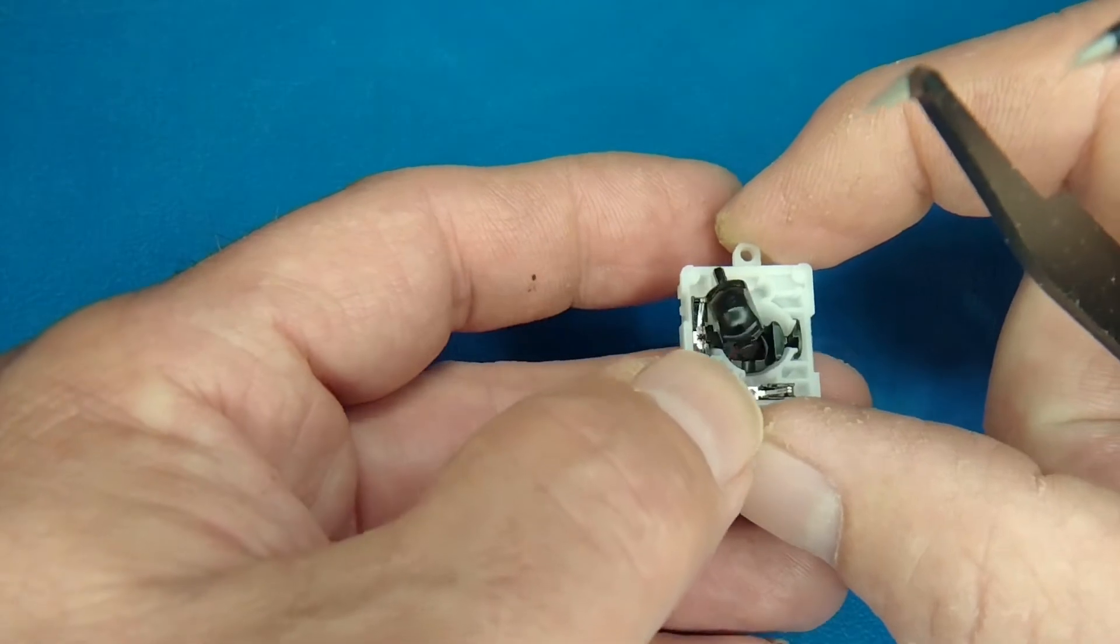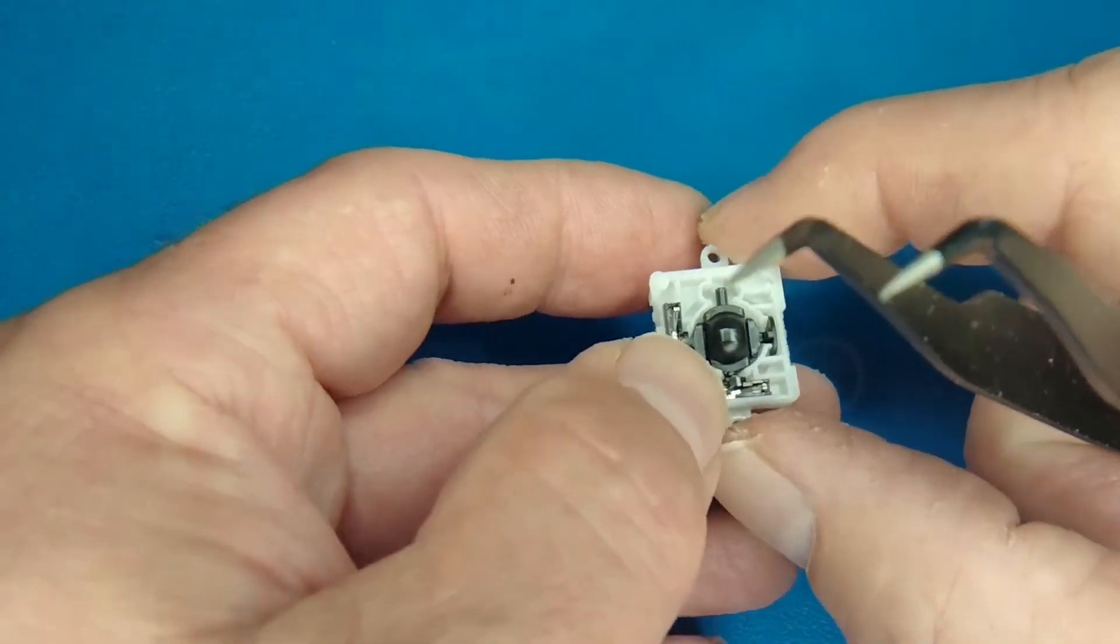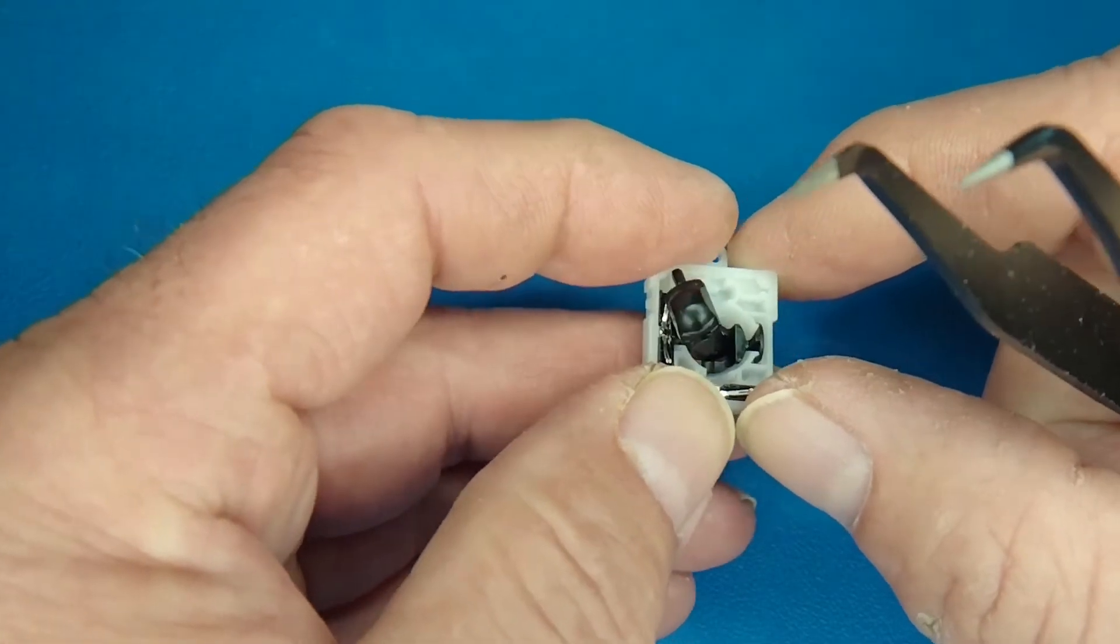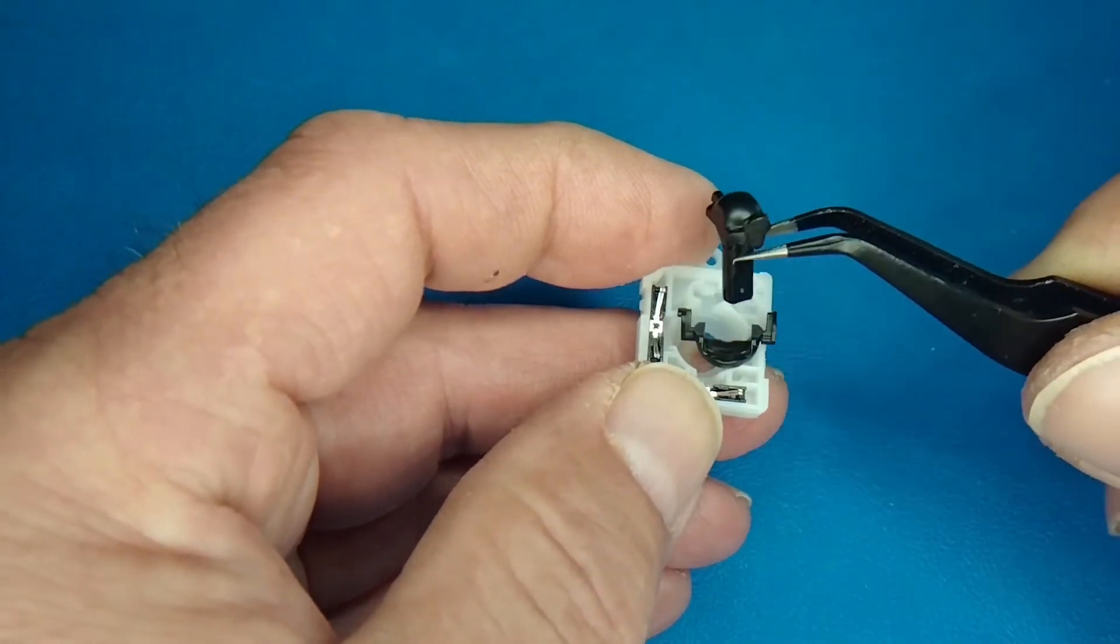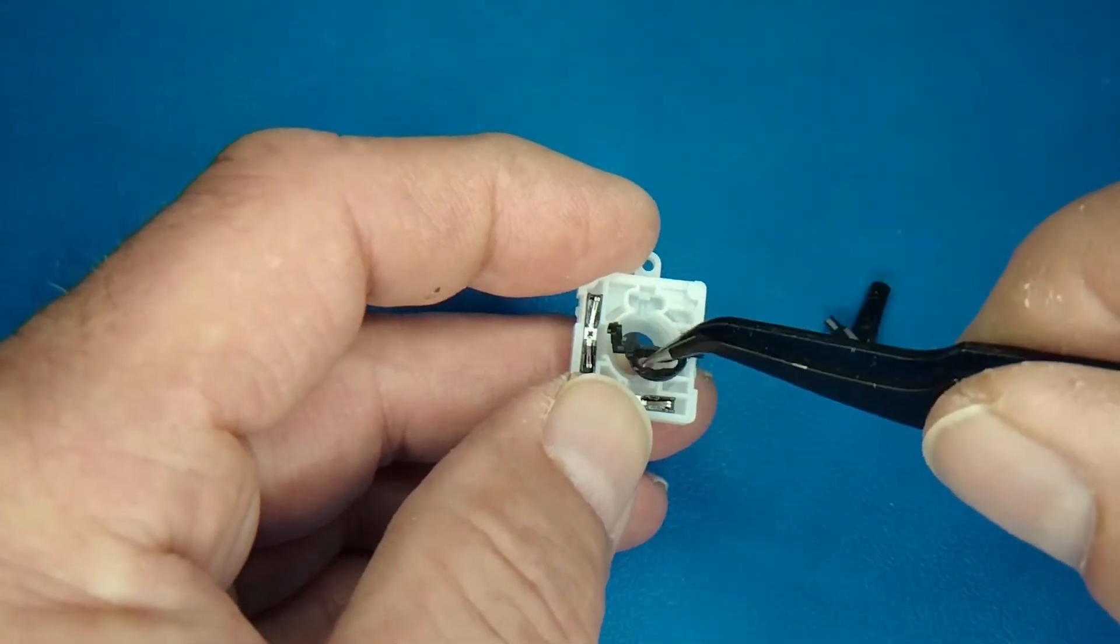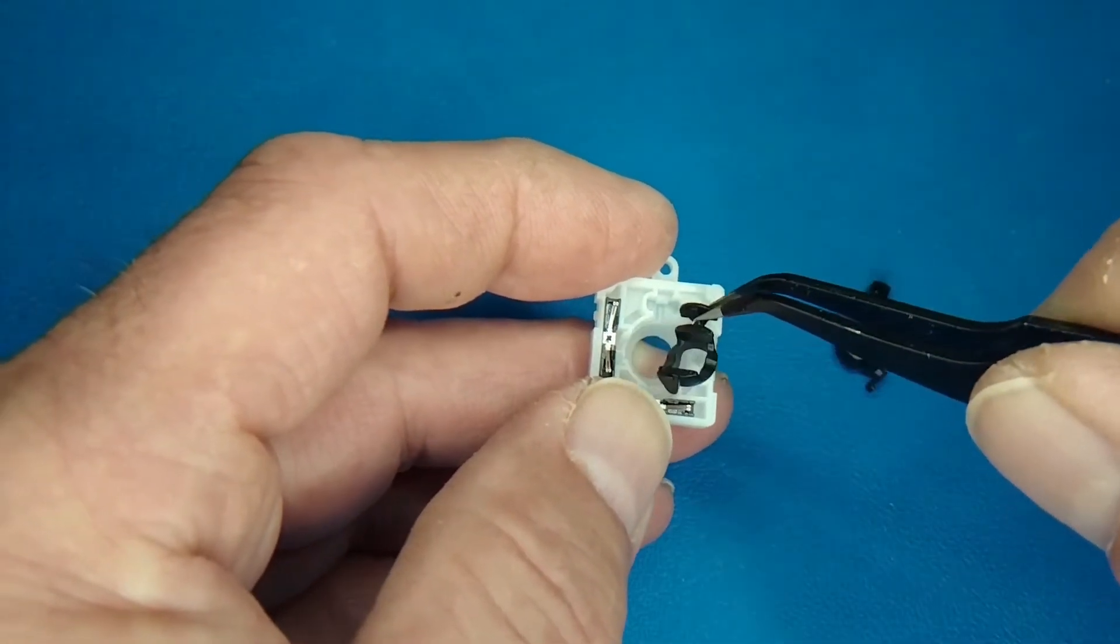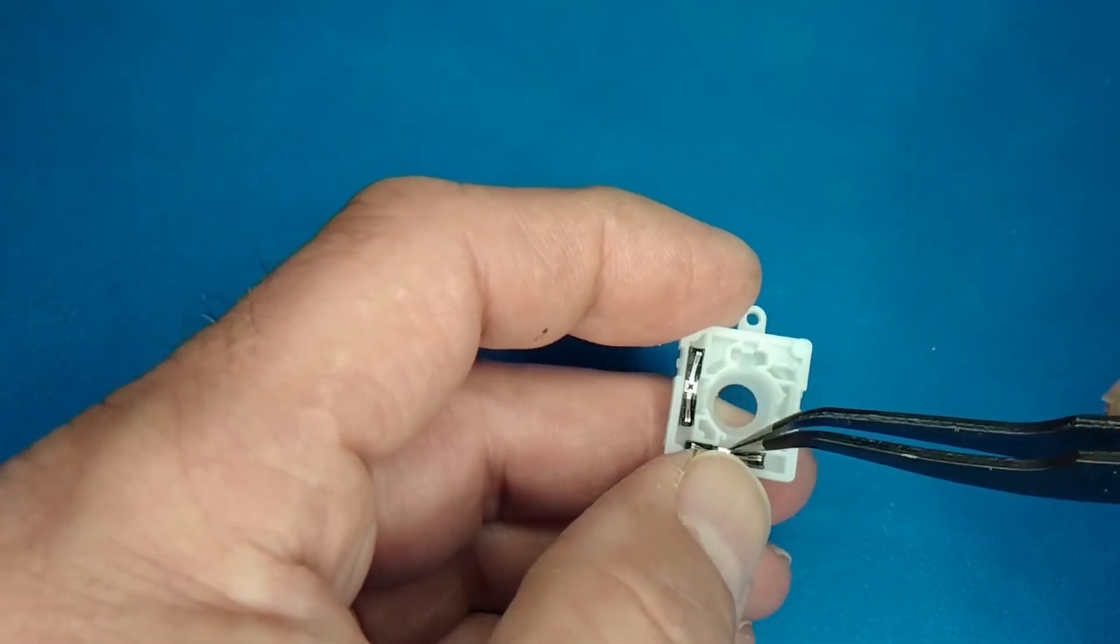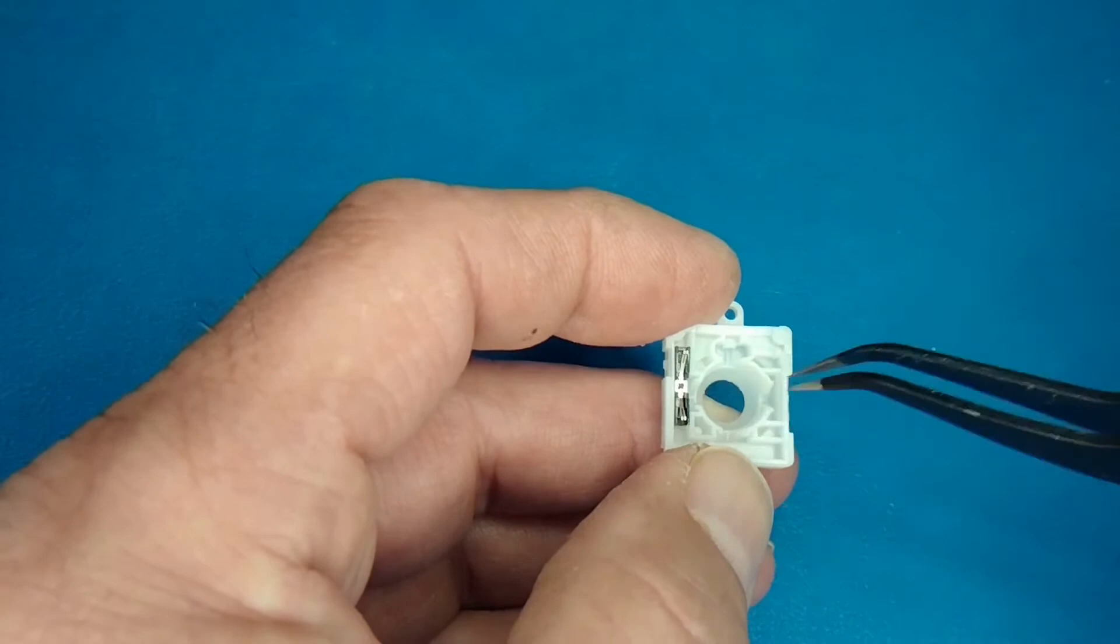And then we're going to pop out the two pieces that make up the stick there in the middle. That's actually two pieces. It kind of looks like it's coming out as one, but it is two pieces. And then that third piece, the cradle right there, that comes out. And then the two contact pieces that move in X and Y.